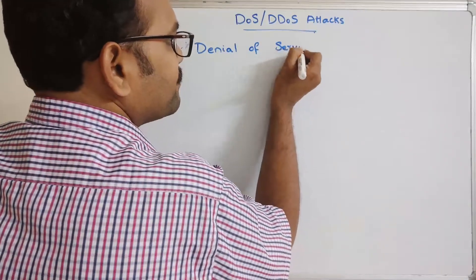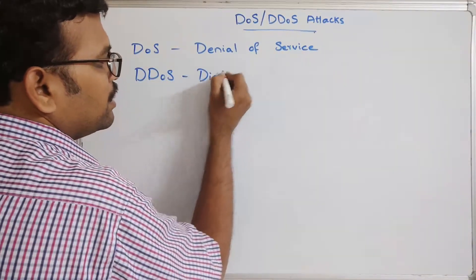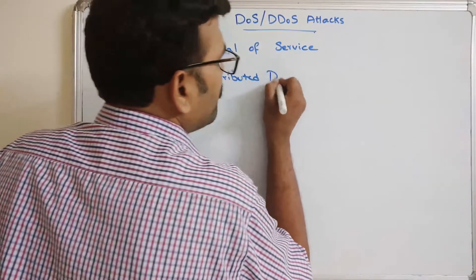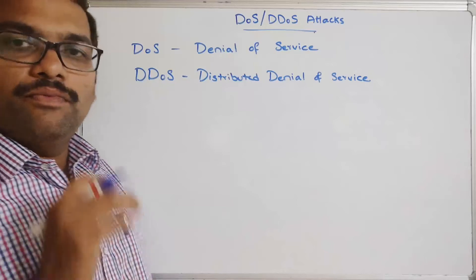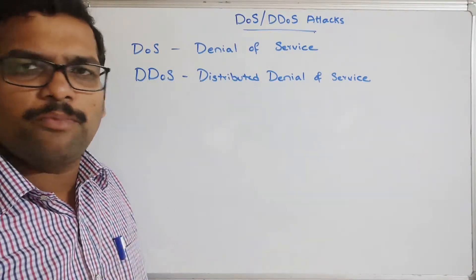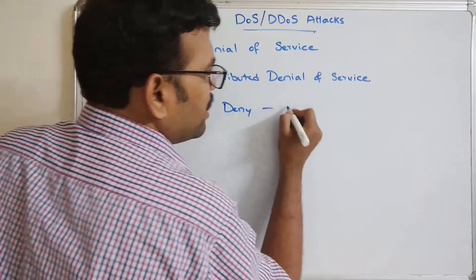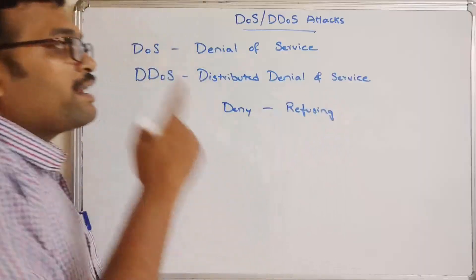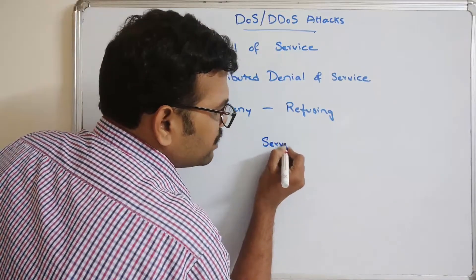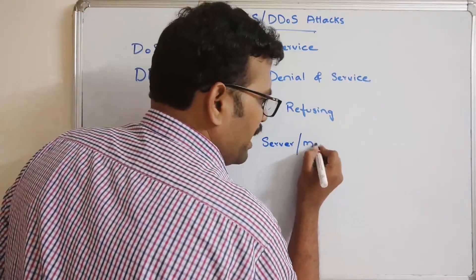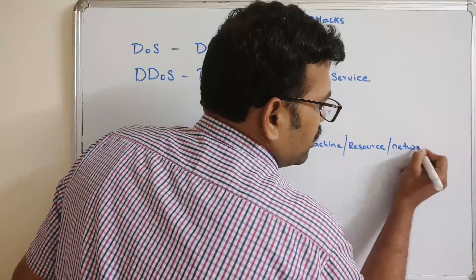DOS means Denial of Service, and DDOS means Distributed Denial of Service. Let's see the working of Denial of Service. 'Deny' means refusing, so refusing the service is called Denial of Service. The service can come from a server, any machine, any resource, or any network.